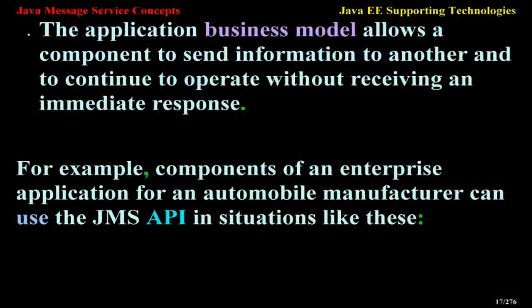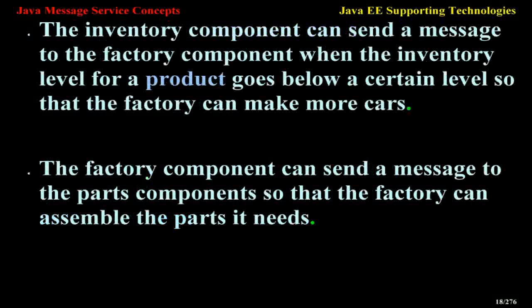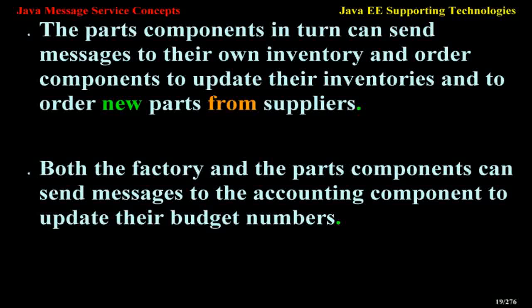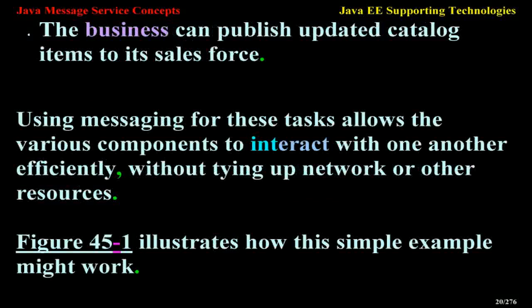For example, components of an enterprise application for an automobile manufacturer can use the JMS API in situations like these. The inventory component can send a message to the factory component when the inventory level for a product goes below a certain level so that the factory can make more cars. The factory component can send a message to the parts component so that the factory can assemble the parts it needs. The parts components in turn can send messages to their own inventory and order components to update their inventories and to order new parts from suppliers. Both the factory and the parts components can send messages to the accounting component to update their budget numbers. The business can publish updated catalog items to its sales force.